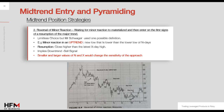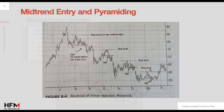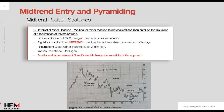Let's provide one possible set of definitions. A minor reaction in an uptrend could be defined as a new low that is lower than the lowest low of the previous N days. The resumption of the trend could be defined as a close higher than the most recent X days high.